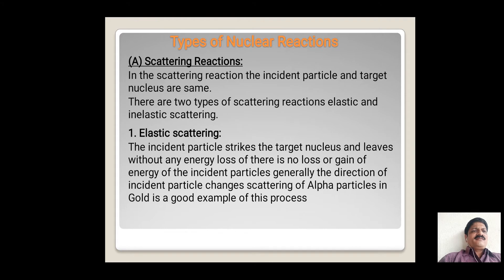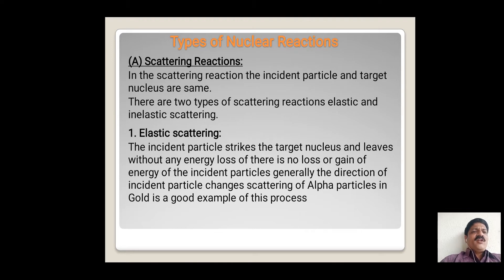In elastic scattering, when the incident particle strikes the target nucleus, there is no loss or gain of energy. The direction of the incident particle changes. The scattering of alpha particles when incident on the gold foil is a good example of elastic scattering. The alpha particle is incident on the gold foil, and there is no loss or gain of energy of the incident particle as well as target nuclei — the alpha particle simply gets scattered.